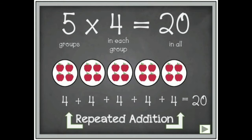Let us understand it. There are 5 groups. Each group has 4 apples. It means number 4 is added 5 times: 4 plus 4 plus 4 plus 4 plus 4 is equal to 20. The number 4 has been taken 5 times. We can also say 5 times 4 is equal to 20. It can also be written as 5 × 4 = 20.